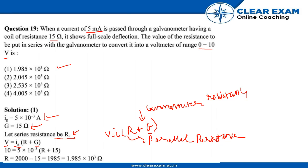V is from the range 0 to 10 volts, so we can find R by putting in all these values. R would be 2000 minus 15, which is 1.985 × 10³ ohms. So the correct answer is option 1. Thank you, hope you understood.